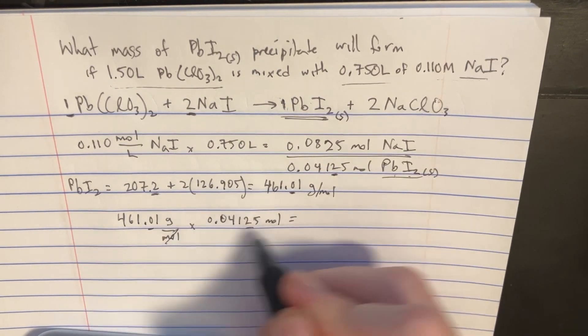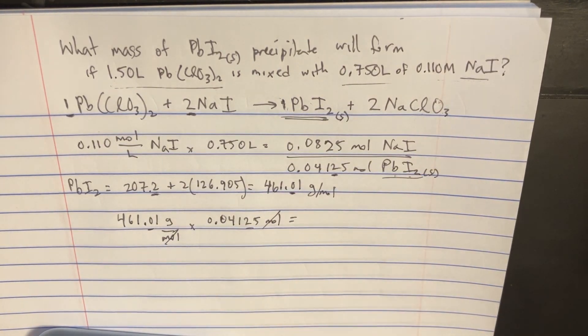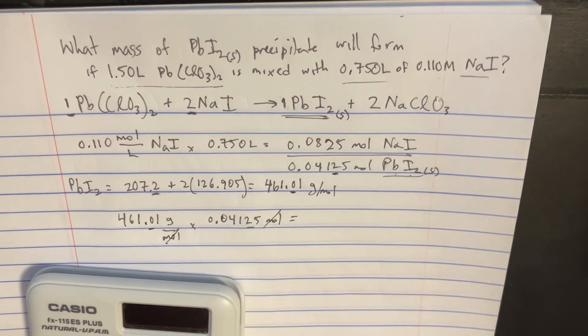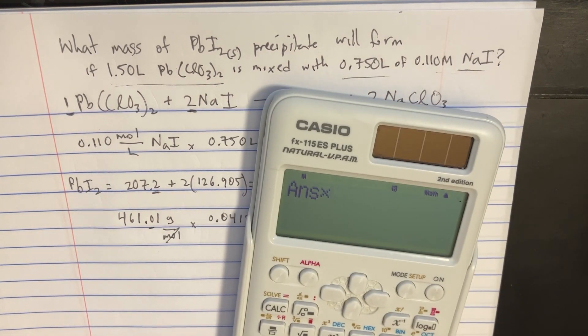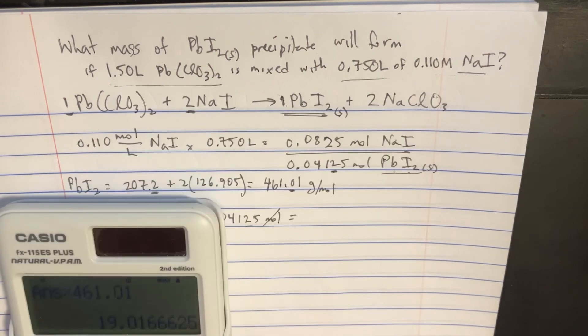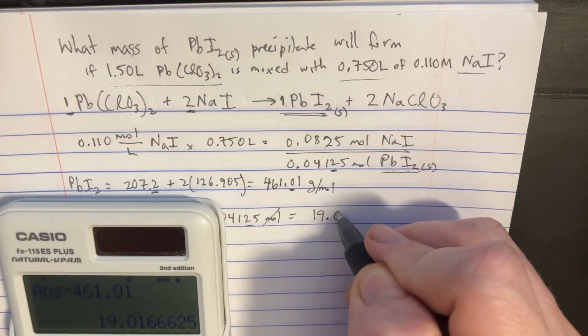then that's just going to cancel out the moles and give us the grams, which should be the mass. So let's go and multiply 461.01, and we're getting the answer of 19.0.